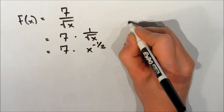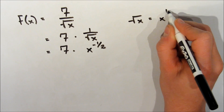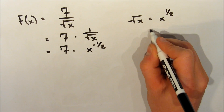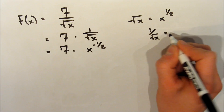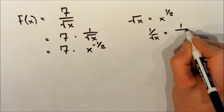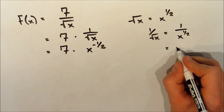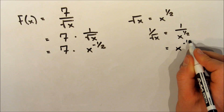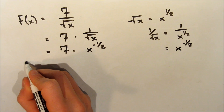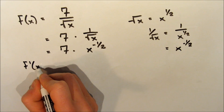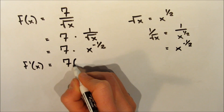I'll show you how I got x to the negative 1 half. We start with the square root of x is equal to x to the exponent 1 half. So, 1 over root x is equal to 1 over x to the exponent 1 half. Then we can just use the same rule we used before and make that exponent negative. Now we're just going to solve that like we would solve any other derivative by using the power rule.